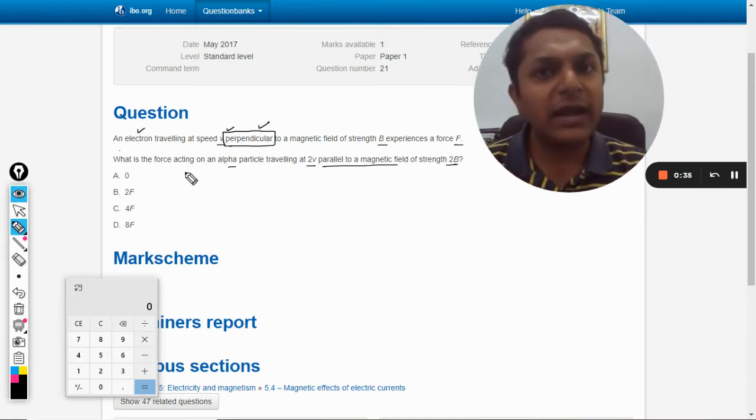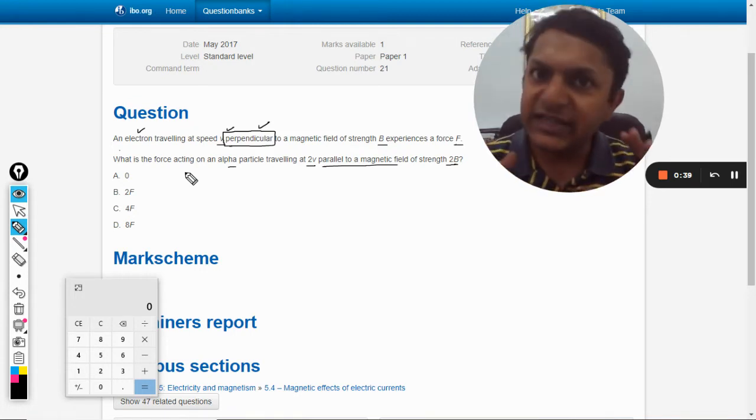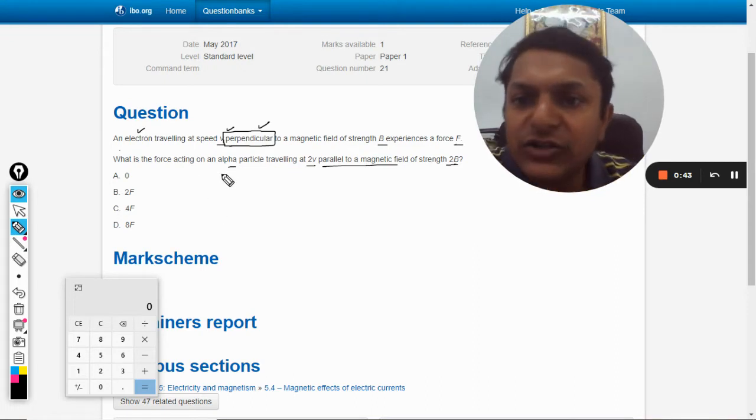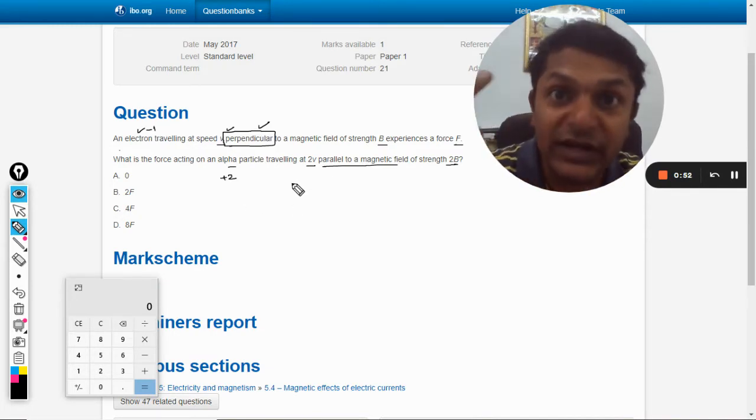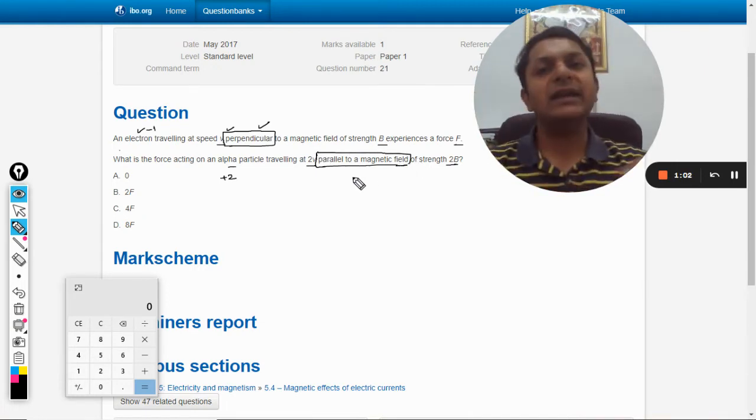And the force being acted on it is F. Now in the second case, there is an alpha particle, so the charge on this is plus 2, and charge of electron is taken as minus 1. So the charge is doubled, and it is traveling at double the speed, so it is 2v. And the magnetic field is also doubled. But the problem is, now it is moving parallel to the magnetic field.